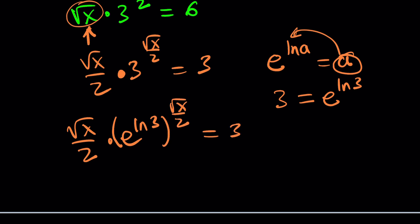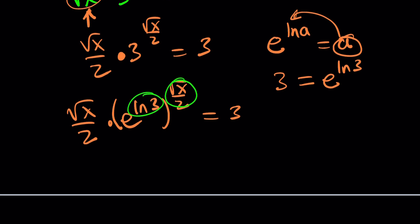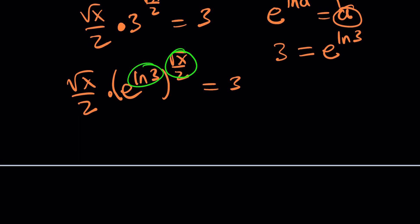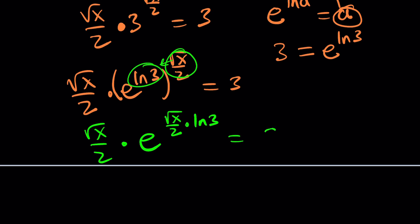Since I divided both sides by something, I didn't do anything on the right-hand side — I just changed the 3. Now these two are going to be multiplied, so we can switch them. I want to bring square root of x over 2 inside, so it's going to look like e to the power of (square root of x divided by 2) times ln(3). And that ln(3) will just be multiplied. We're almost there because now this is my new t.